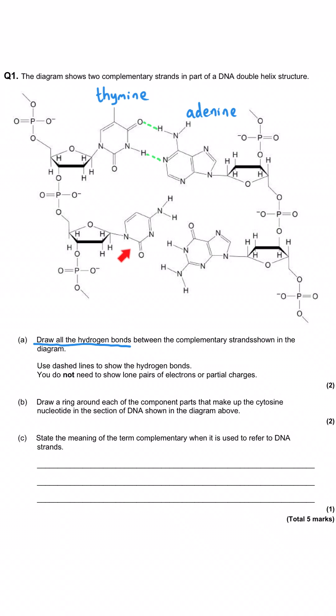And then underneath, this is the cytosine base and this is the guanine base. And we need to remember that that has three hydrogen bonds and they would be in this position, this position and this position. And that would be necessary for that second mark in part A.